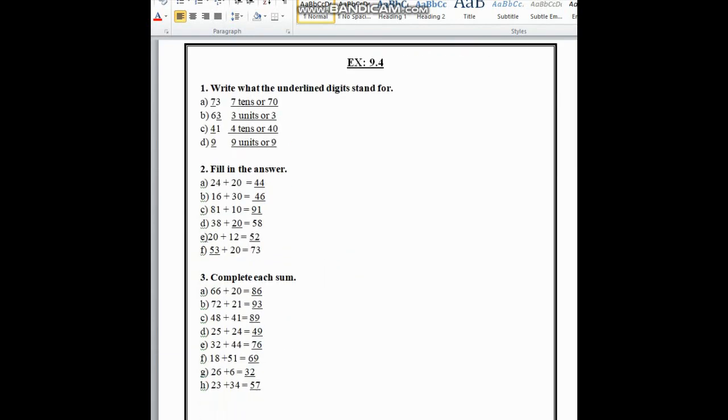Now in exercise 9.4, we can see number 1. Write what the underlined digit stands for. Here is 73 and 7 is the underlined number. The 3 stands in the units or ones place and 7 stands in the tens place. So we have to write 7 tens or 70.